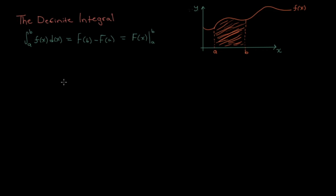Let's do a quick example to show you why you don't need the plus C. So let's say we have a function f at x equal to 6x squared, and we're asked to find the integral from A to B of f at x dx.